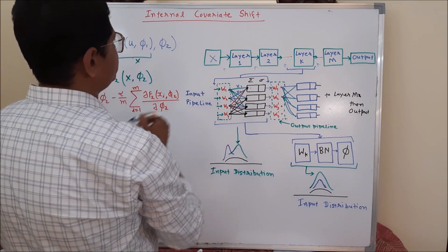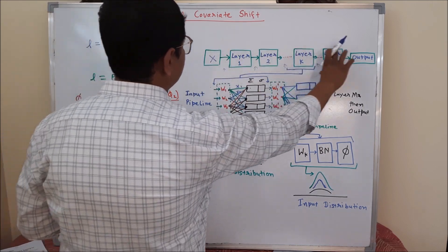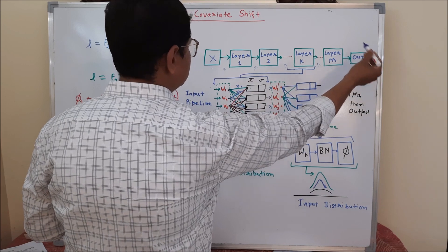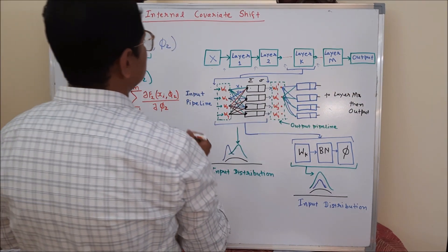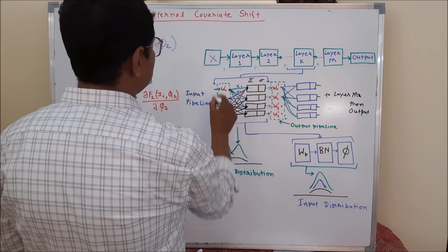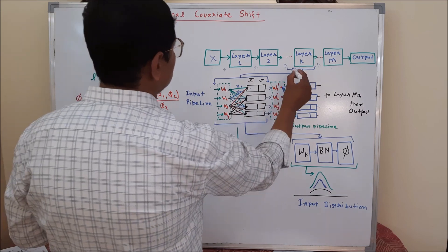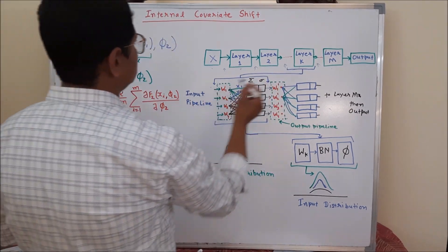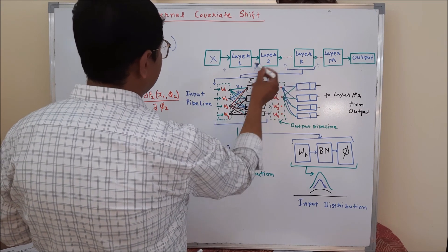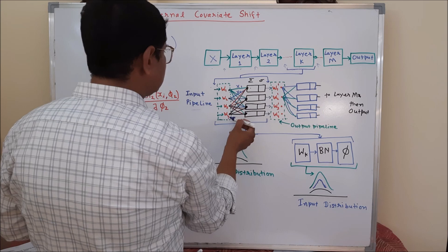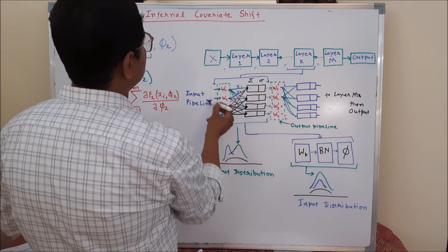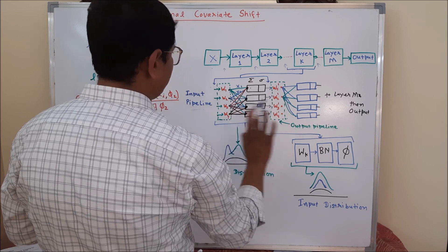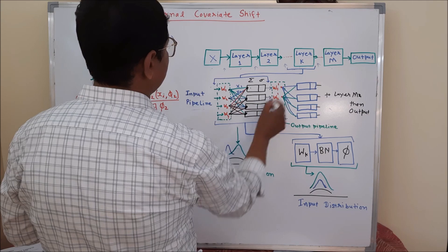In more detail, what happens in traditional deep learning architectures is that we take input, apply multiple layers — say M layers — and then generate some output. For each layer, we feed the data through the previous layer's output. To explain this through the k-th layer, in the k-th layer the data will come through the previous layer. For simplicity, we have taken four inputs fed to four nodes of the k-th layer network.